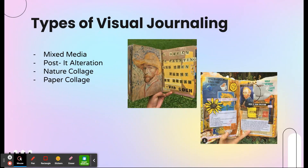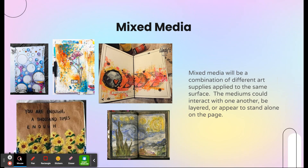There are a few different types of visual journaling. The first one, which really is everything, is mixed media. Mixed media is when you use more than one art material layered on top of one another. So this example has paper bags with paint and sharpie layered on top — they used collage, painting, and sharpies. It's using different art supplies on the same surface and layering them on top of one another.